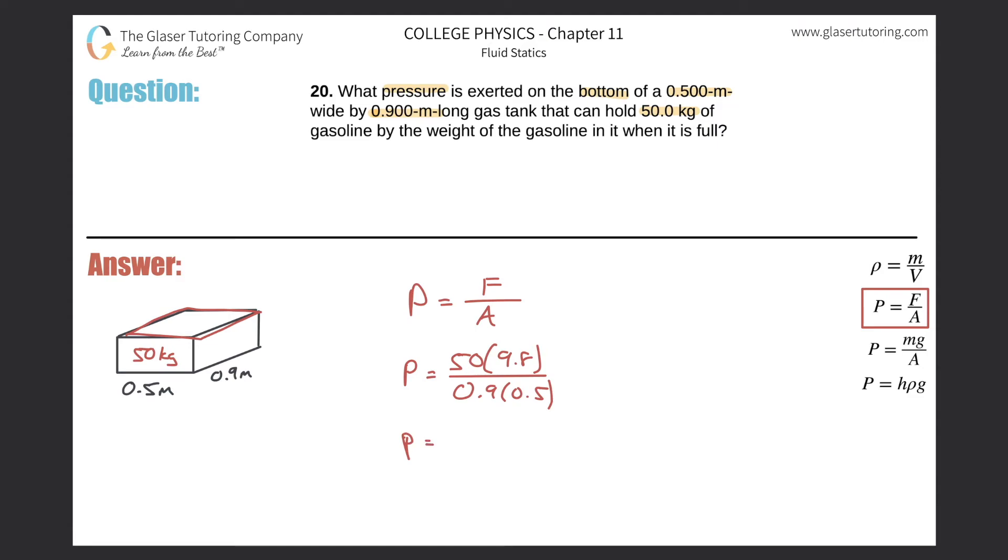And we have now the pressure being equal to 50 times 9.8 divided by parenthesis 0.9 times 0.5. And what do we get? We get about, and I guess we'll use three sig figs, so it looks like it's going to be